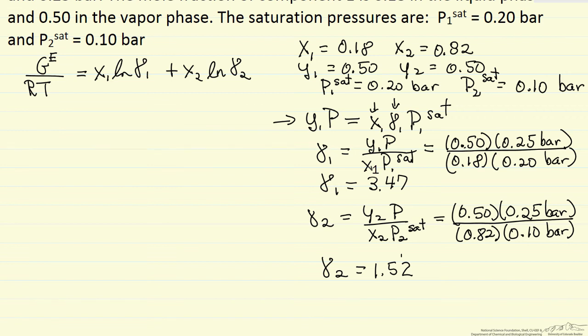Namely the pressure is higher than what we predict from Routh's law. So indeed the pressure is higher than the saturation pressures of either components, which means at some point in this composition range we would have an azeotrope.